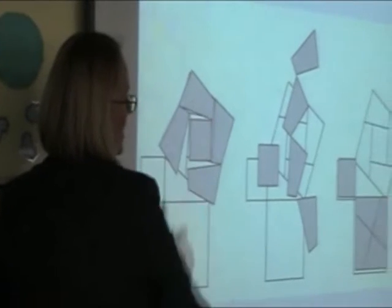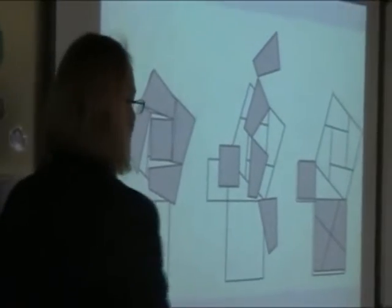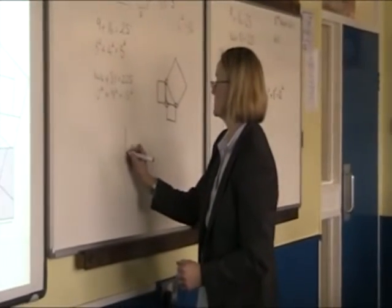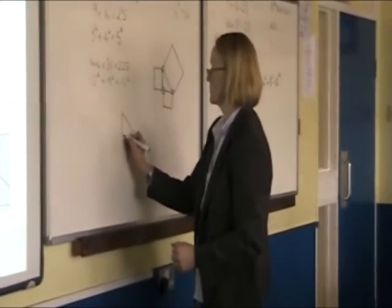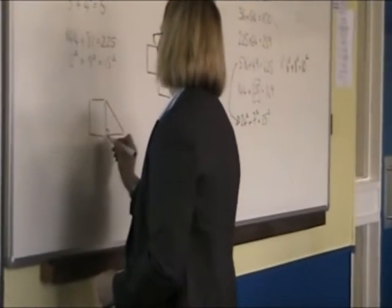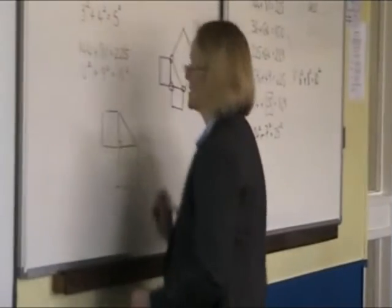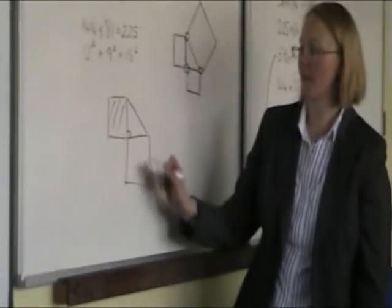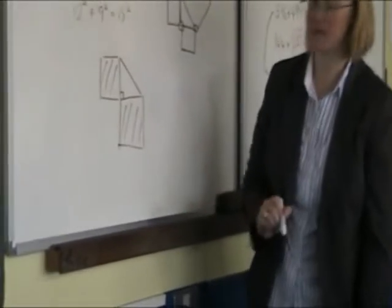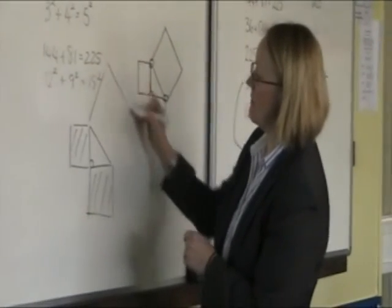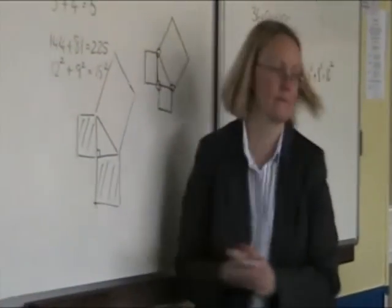That big square being exactly the same as the area of the two little squares. If I've got a right-angled triangle, right? If I've got a square on this side and I've got a square on this side, the area of this and the area of this added together is going to be the same as the area of this square here.